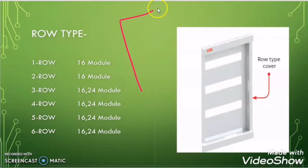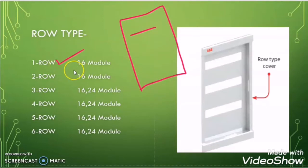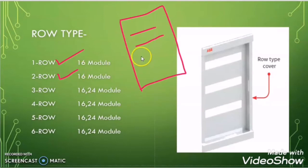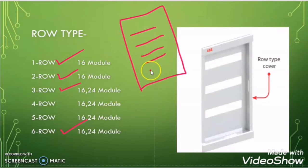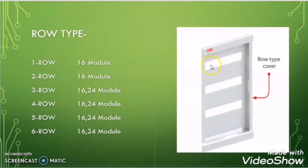If the enclosure has two rows, it will be called a two row enclosure. If it has three rows, it will be a three row enclosure. If it has six rows, it will be a six row enclosure. In our example, this enclosure has three rows — one, two, and three — so this enclosure is called a three row enclosure.